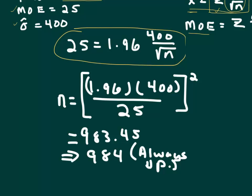And at the end here, I had 983.45. You always round up on the sample size problems, because this is the minimum, and of course, you can't have just, you can't have a fractional number of people, so if this is the minimum, you're always going to round up to the next highest value.